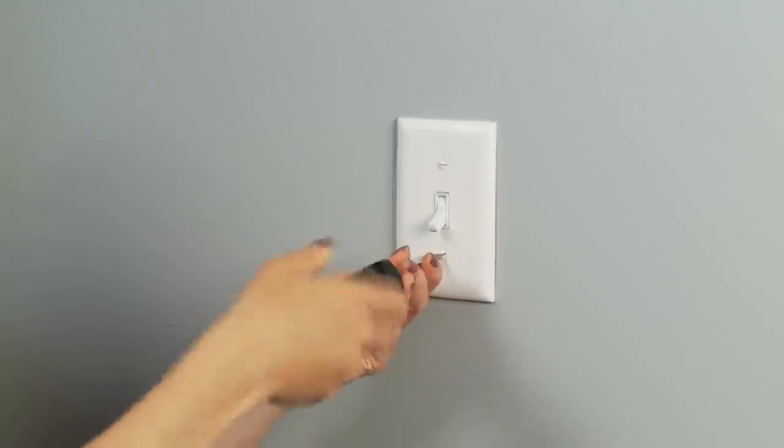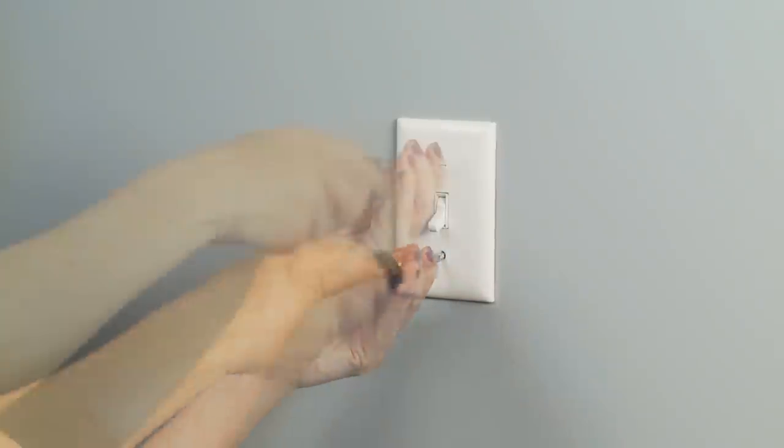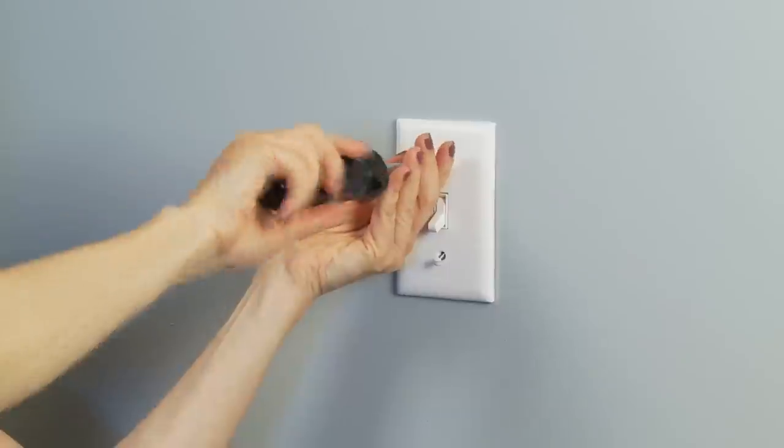Once you turn off the power at the breaker, you can begin removing your old switch. Begin by unscrewing the wall plate from the wall.